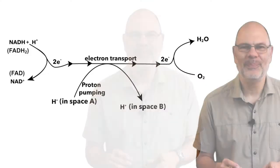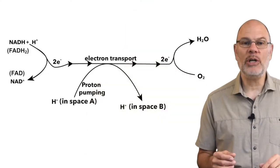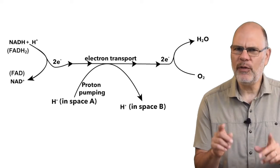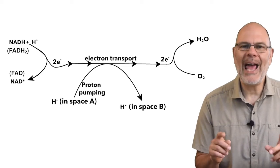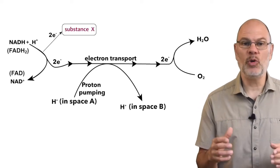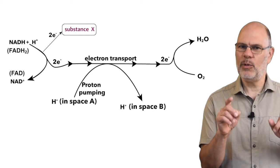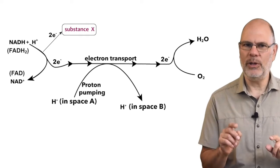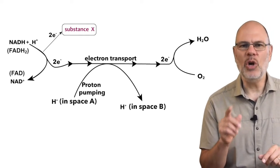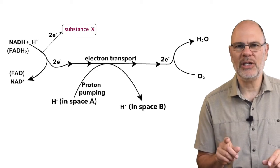Example 1. Here's a part of the electron transport chain — it's hopefully familiar to you. We'll add substance X, which absorbs electrons. Predict what that would do. Hit pause. Make a prediction. Don't forget your justification.